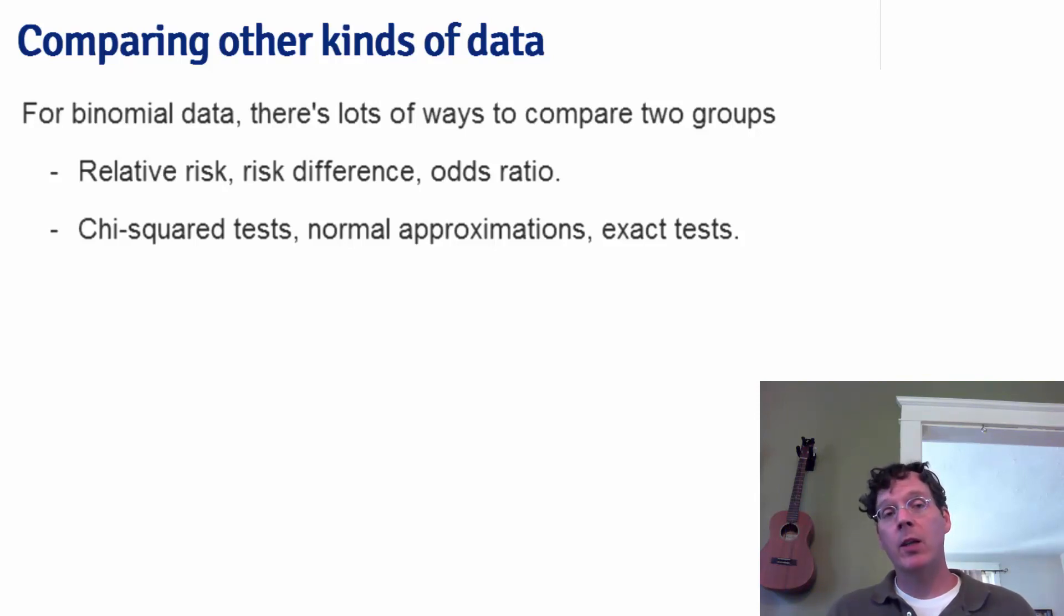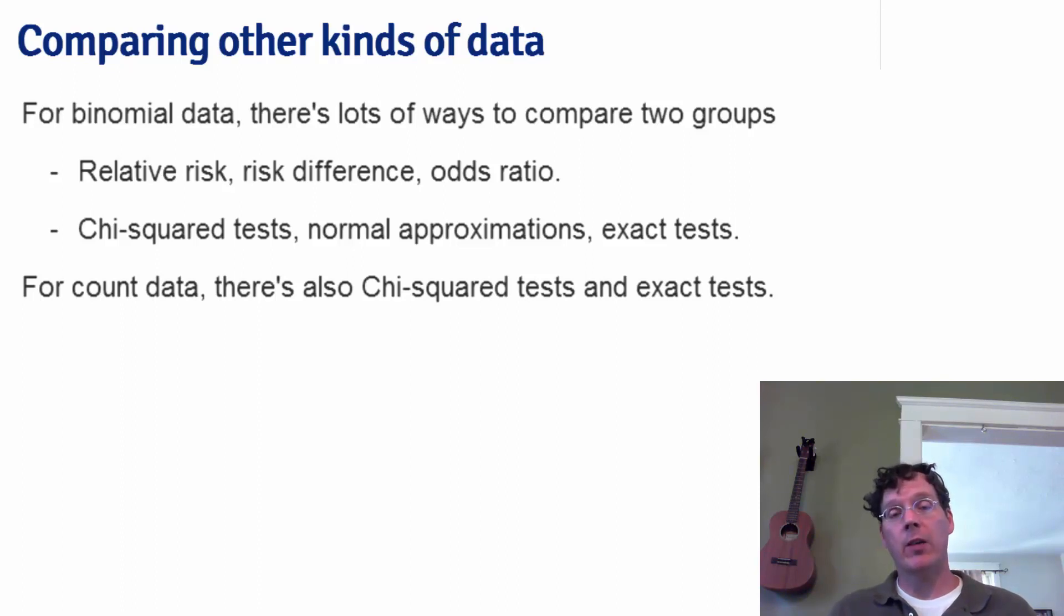In addition, when your data is binary, you might consider something like looking at odds ratios, which we will cover in our generalized linear model component of the regression class. The same can be said for count data, where we'll talk about Poisson models and generalized linear models for rates, again in our regression class.